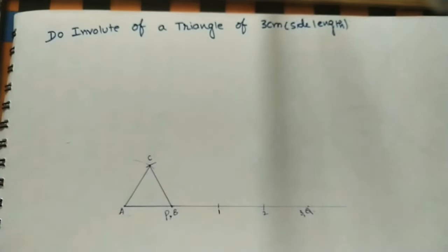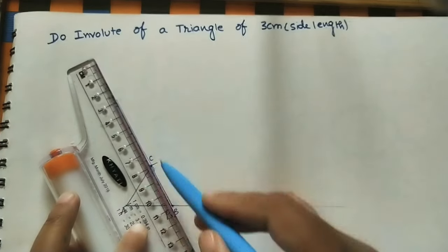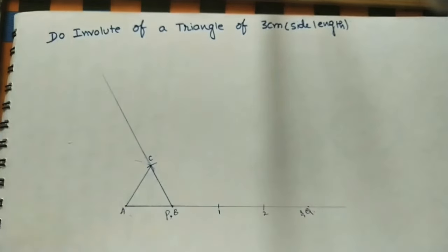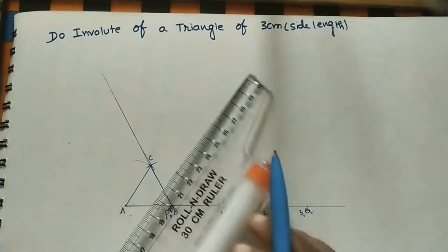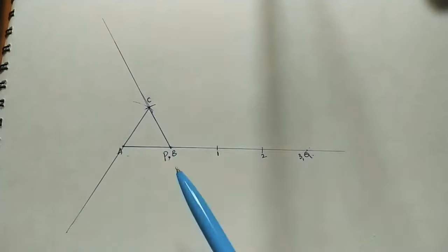In the AB direction we did a line. Similarly, in the BC direction also do one line of some length. Similarly, in the AC direction also do one line. In all three directions we have drawn the lines.